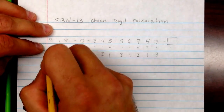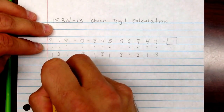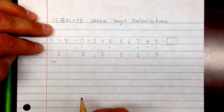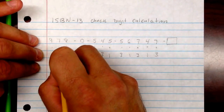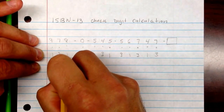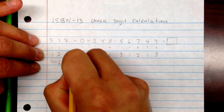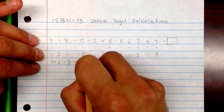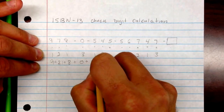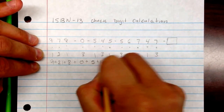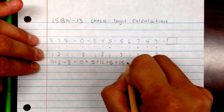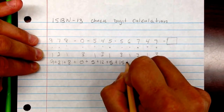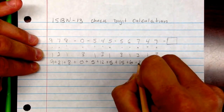Then go ahead and find the products of those — just multiply straight down. 9 times 1 is 9, and you're going to find the sum of these afterwards, so I'll put a plus sign in between. 7 times 3 is 21. Go ahead and figure these all out. You can pause this at any time if you want and check these afterwards to see if you got them right.